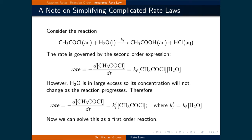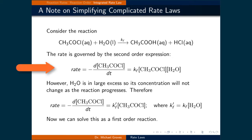Here is one strategy to simplify a rate law expression. Consider the reaction CH3COCl plus H2O gives you CH3COOH plus HCl. The rate is governed by a second order expression: the negative rate of change of CH3COCl by DT is equal to KF times the concentration of CH3COCl and the concentration of H2O.